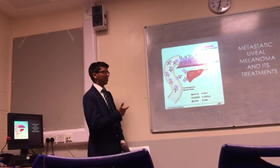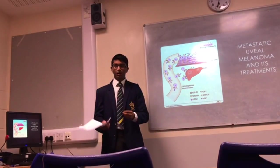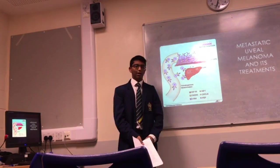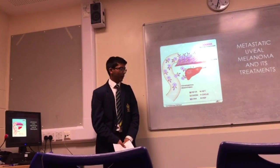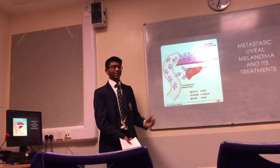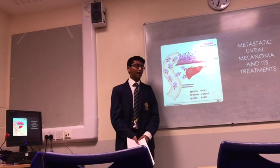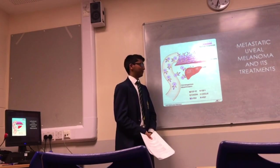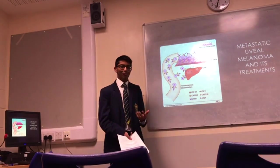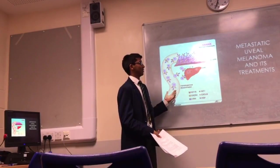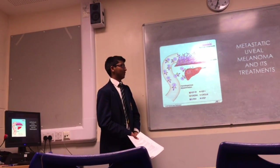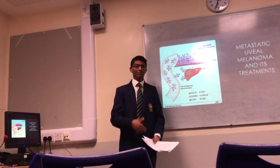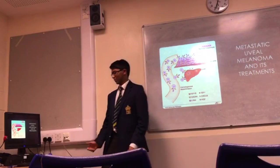Briefly on metastatic disease — when the disease spreads to other parts of the body. Most of the time melanoma spreads to the liver, and unfortunately metastatic disease is still fatal, with life expectancy of only a couple of months after diagnosis. Anti-angiogenics don't work on this condition, as will be explained. There are some radical ideas — such as isolating the liver and bathing it in solution — but nothing tangible has come of that yet.